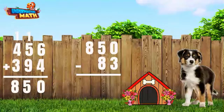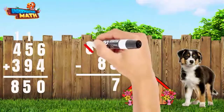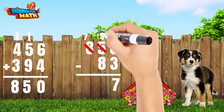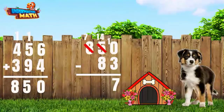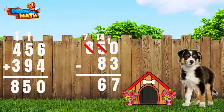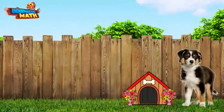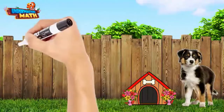We can't subtract three from zero, so we have to borrow from the five. The five becomes a four and our zero becomes a ten. Ten minus three is seven. Again, we can't subtract eight from four, so we need to borrow — the four becomes a fourteen. Fourteen minus eight is six. Finally, seven minus zero is seven. We had 767 flowers left in May.